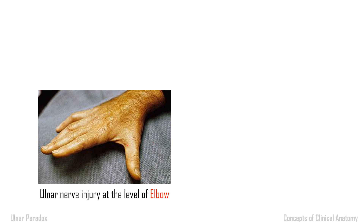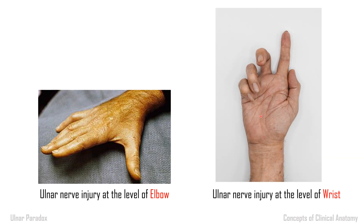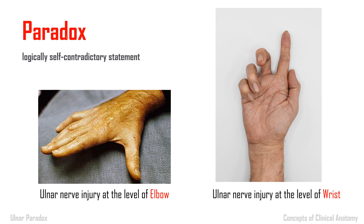But when we see the ulnar nerve, if the lesion is at the higher level — that is, at the level of elbow or above — the deformity will be very mild claw hand. When we see the same ulnar nerve injury around the level of the wrist, it leads to severe claw hand deformity. That's why in the classical nerve injury, when the lesion is at a higher level the deformity should be more, but here when the lesion is at the lower level the deformity is more. That's why the name is given: ulnar paradox — a logically self-contradicting statement.